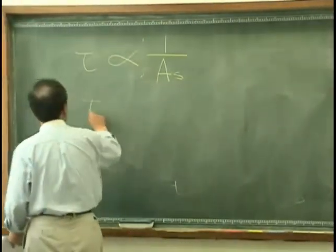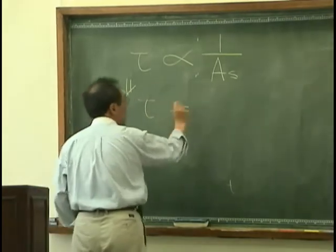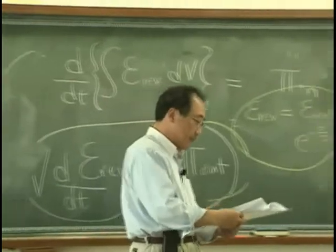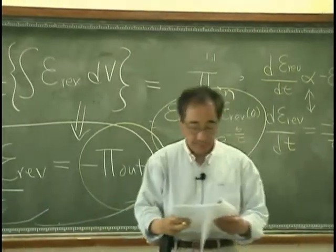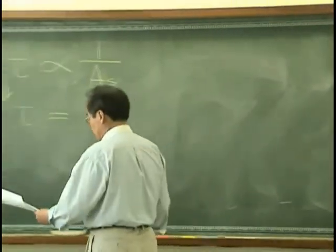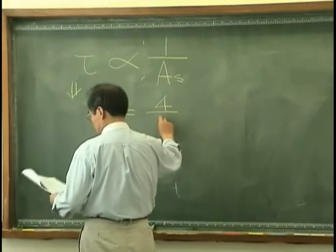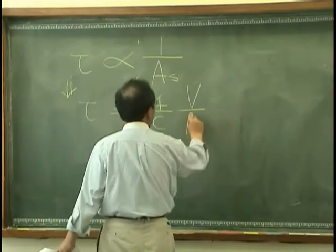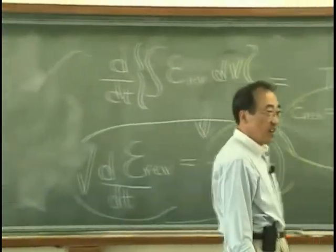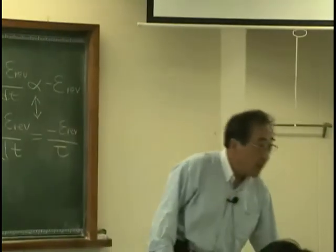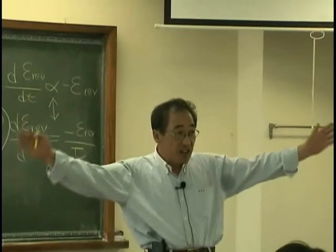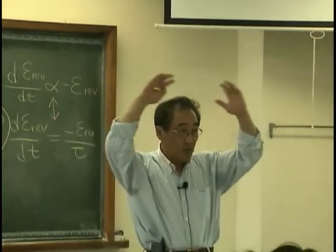And we want to make this proportionality to equality. It turns out to be, this is great. This is great. Tau is proportional to volume means that I have big room, then tau is getting to be bigger and bigger. Why?